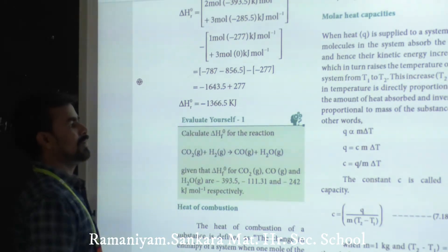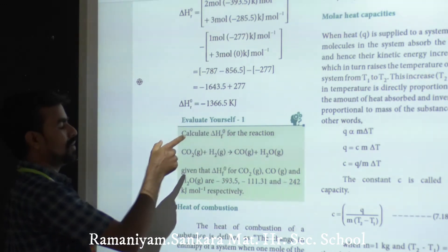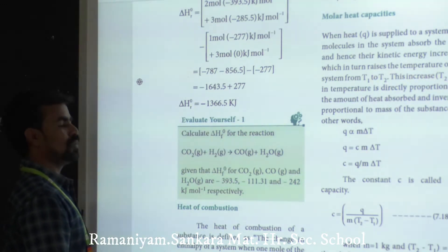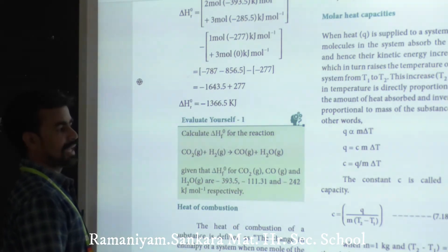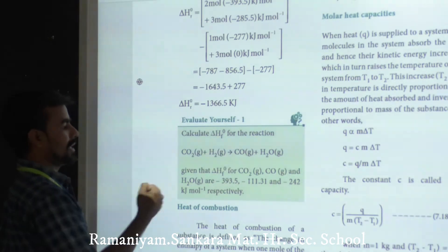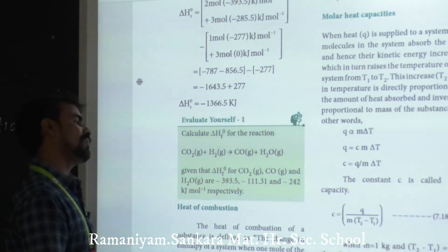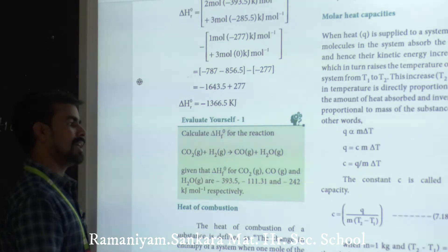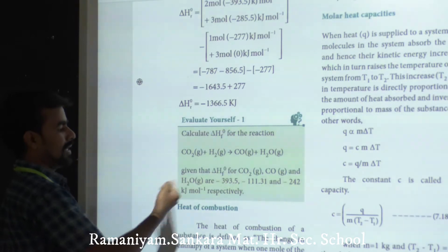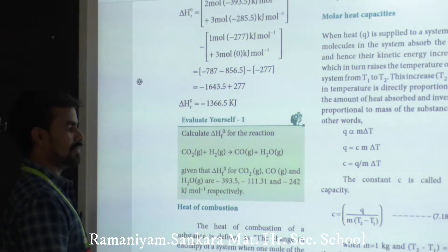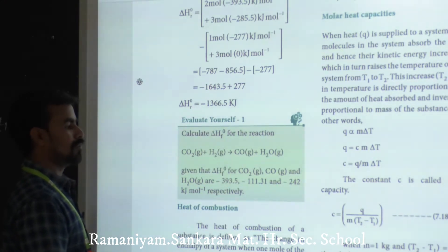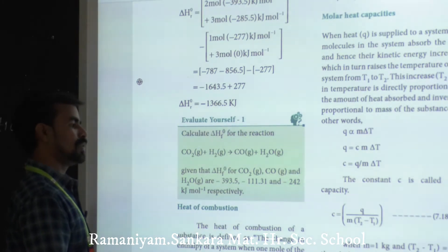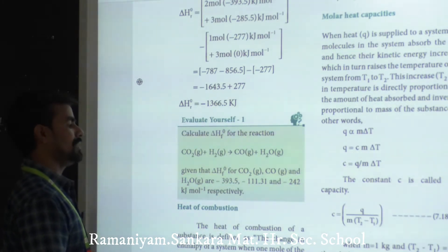Now let's evaluate yourself. Calculate delta H°f for the reaction: CO₂ (g) + H₂ (g) → CO (g) + H₂O (g). Given delta H°f values: CO₂ (g) = −393.5 kJ/mol, CO (g) = −111.31 kJ/mol, H₂O (g) = −242 kJ/mol.